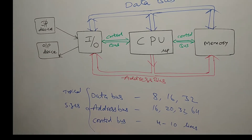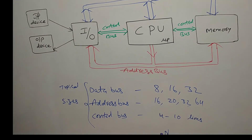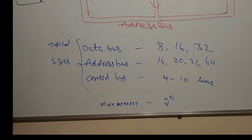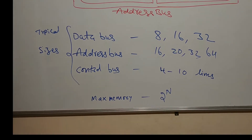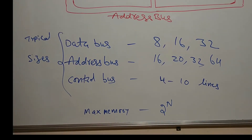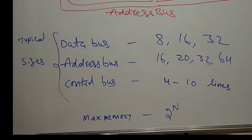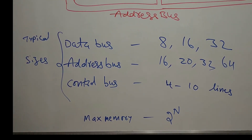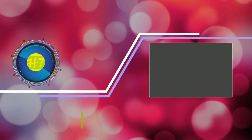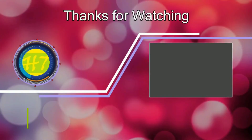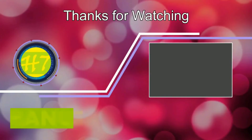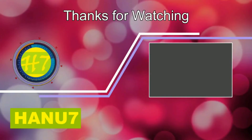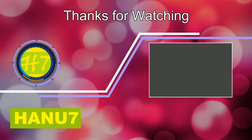The typical sizes are also given here, and the maximum memory a processor can access is given by the formula 2 to the power of n, where n is the number of address lines.